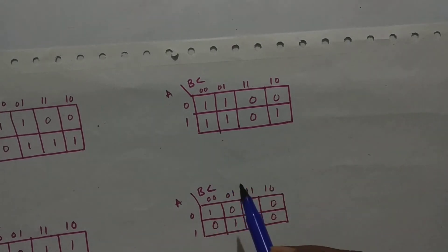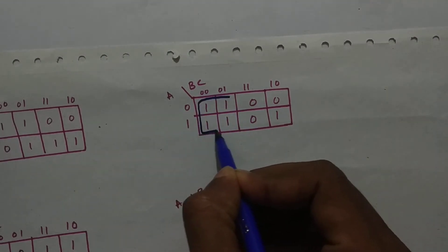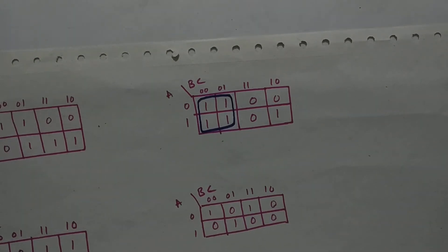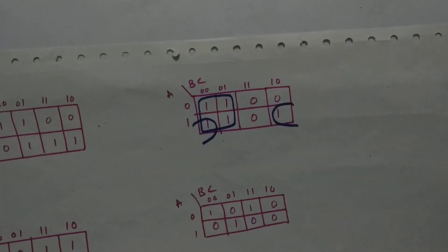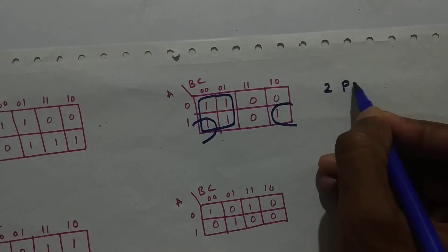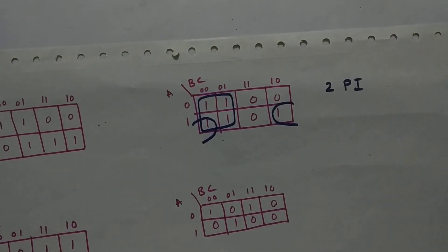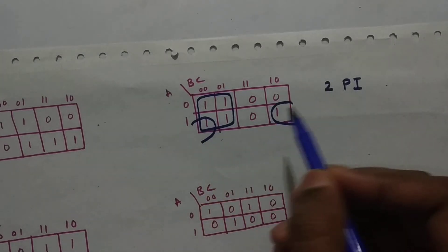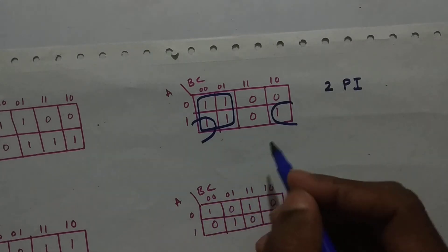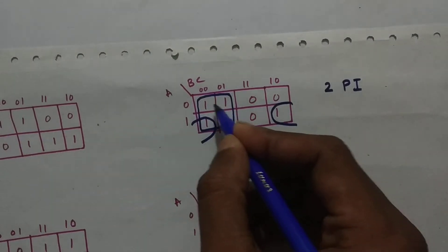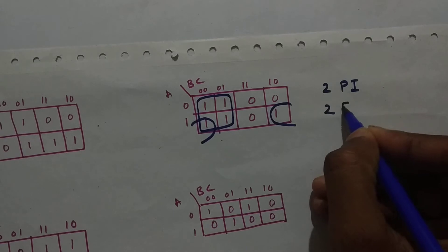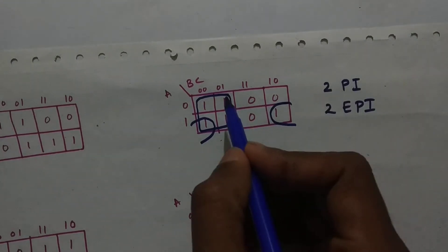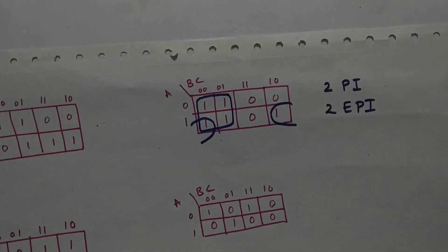Let us take this example. Now let's form groups first. When forming a group, take the largest group first — we can form a quad here. Now we need to form a group for this remaining one; we can form a pair here. So now we have two prime implicants. Now let's see what about essential prime implicants: this one is only covered by a pair and these ones are covered by only the quad. So we have two essential prime implicants. Remember, we cannot form a group inside a bigger group — never forget that rule.